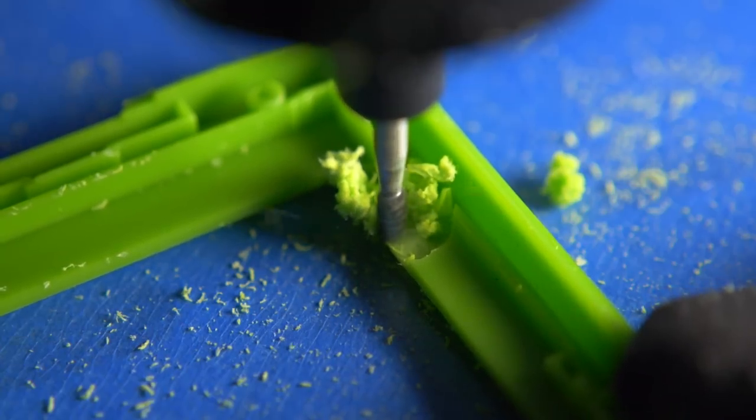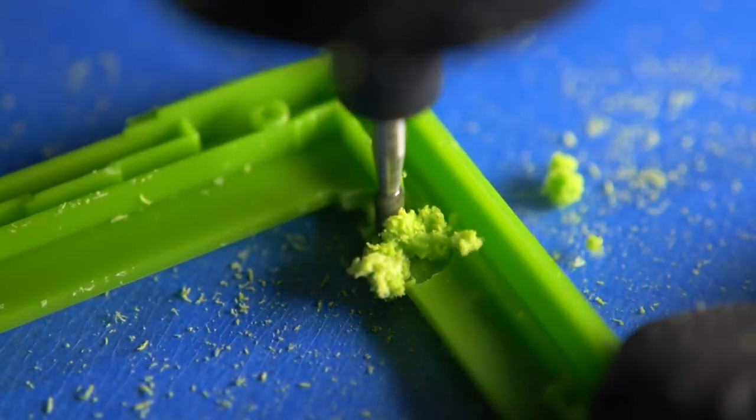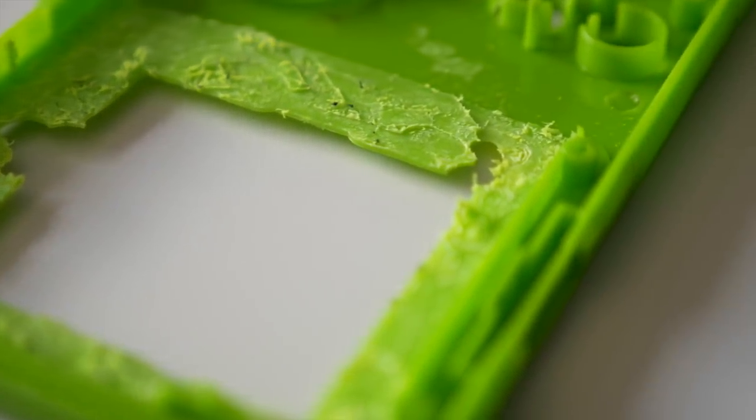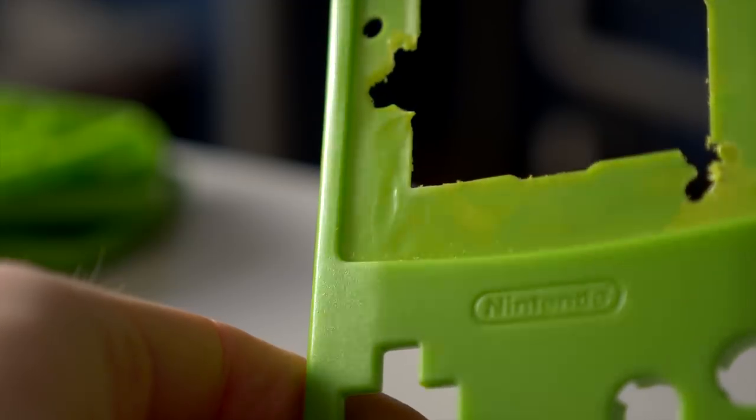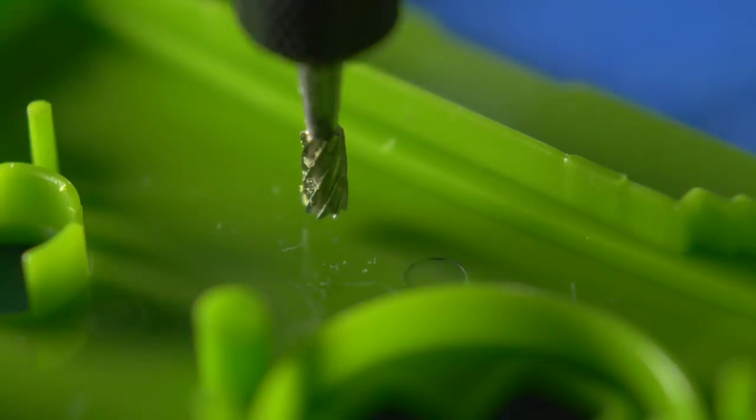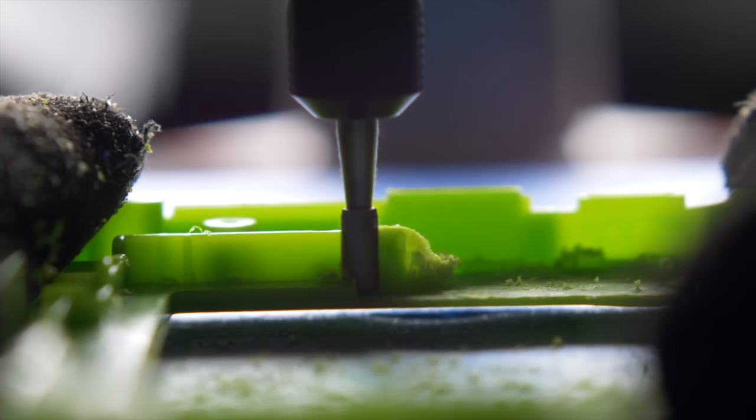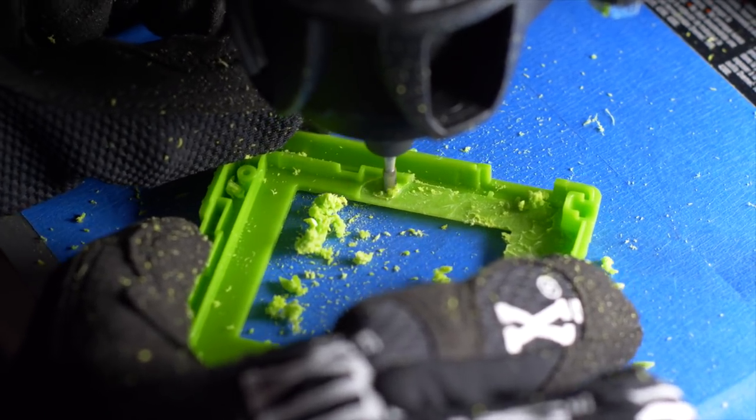If I set the speed on the Dremel too low, then it had the tendency to bog down and sometimes snag on the housing, causing the bit to cut straight through it. If the speed was too fast, then it would melt the plastic instead of cut it. Notice the wavy distortion here? Getting a good result came down to a combination of the right speed, feeding the piece into the bit very slowly, and applying a lot of pressure to hold the housing flat against the base.